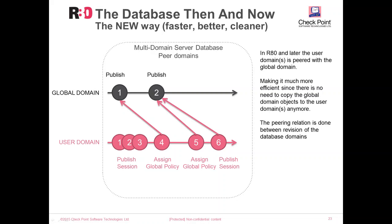When you do changes to the global domain and press publish, a new revision on the global domain will be created. In order for the user domain to get the changes — new rules, new objects, etc. — you need to reassign the global policy to update the user domain, which creates a new revision in the user domain. The same technique applies to threat prevention updates and application control updates. Each update creates a new revision in the relevant data domain, and each user domain can be paired with a different revision of the global domain or data domain.